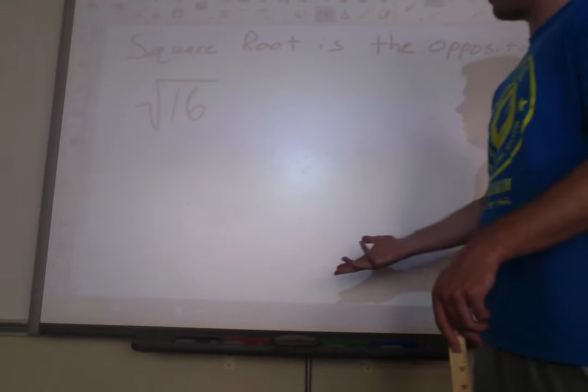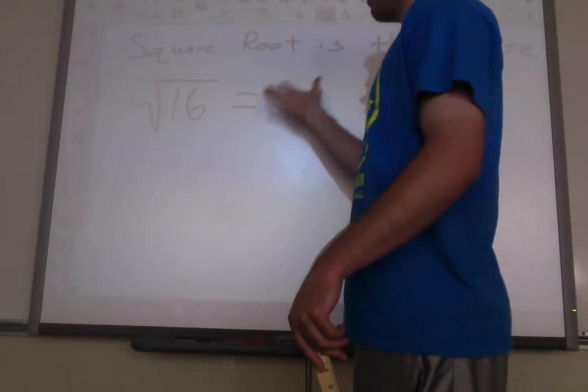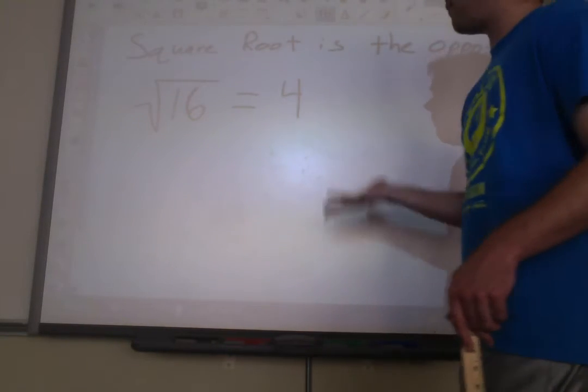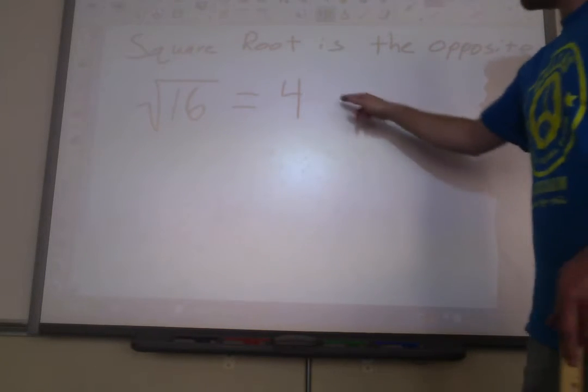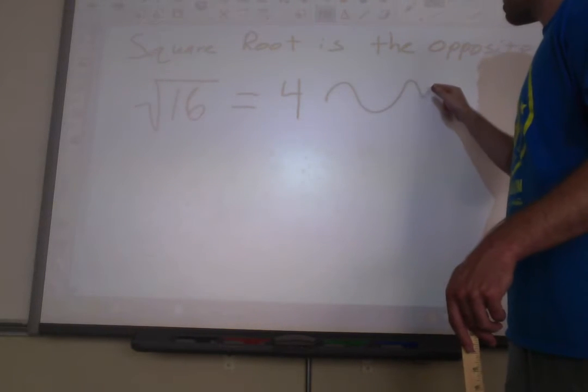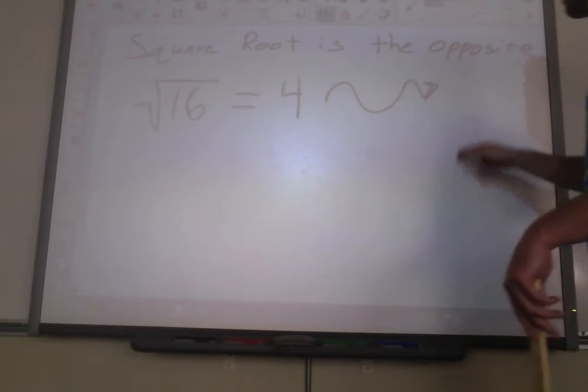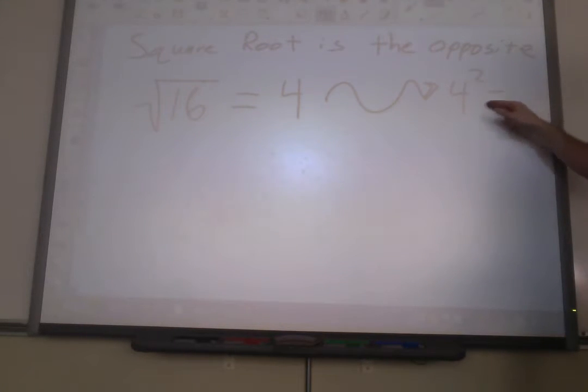The answer, of course, is 4. So that's it. The square root of 16 is 4. Because, if we were to go in reverse, 4 squared would be 16. So they're just opposites of each other. Okay?